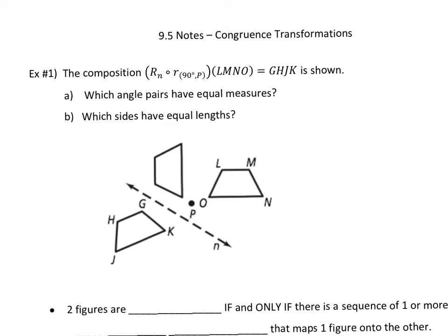So we are going to look at number one here. It says the composition, meaning multiple things happening together. Can you tell me what this says? A reflection over line N. What's the dot? After. A rotation of 90 degrees around point P. Which of those do you do first? The rotation. So this is saying this happened.